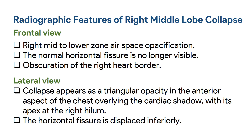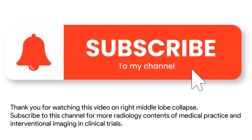There is obscuration of the right heart border. In the lateral view, the collapse appears as a triangular opacity in the anterior aspect of the chest overlying the cardiac shadow, with its apex at the right hilum. The horizontal fissure is displaced inferiorly. Thank you for watching this video on right middle lobe collapse.